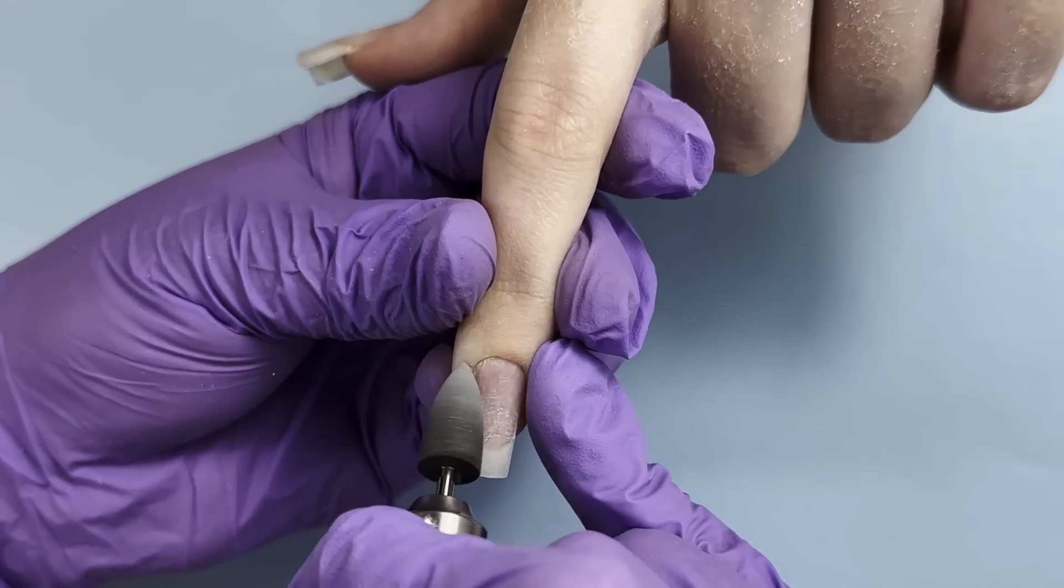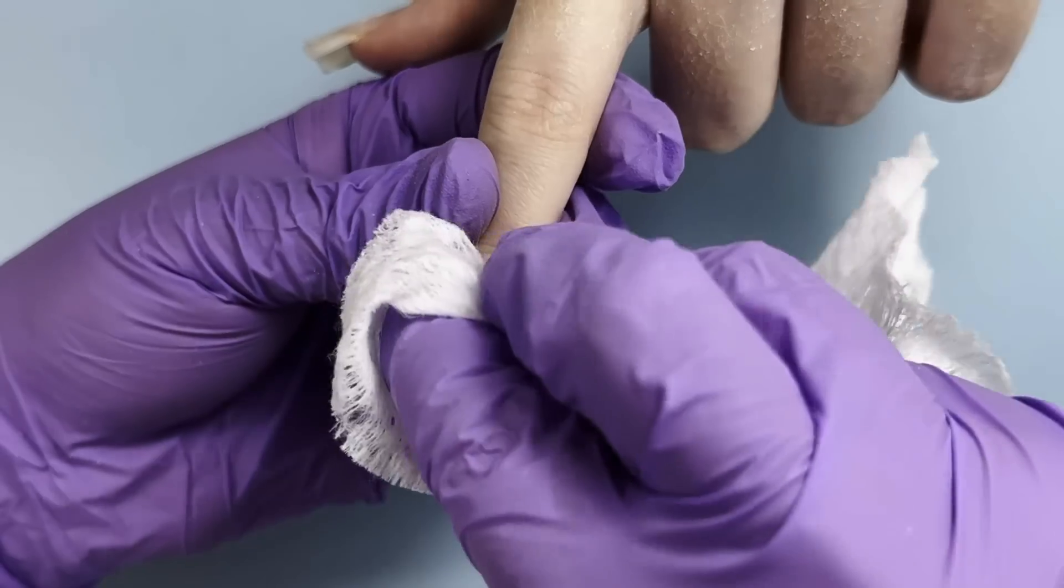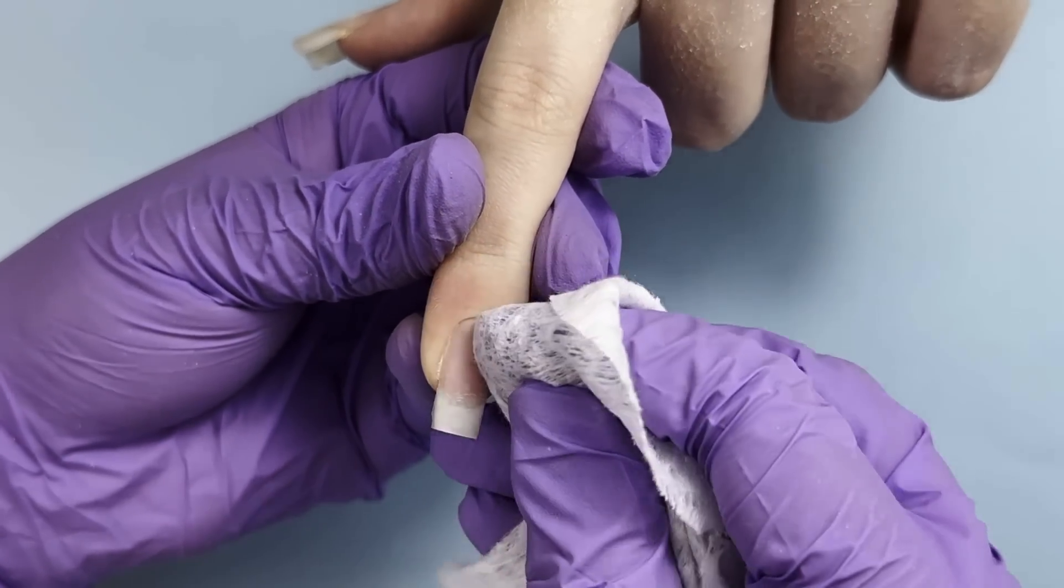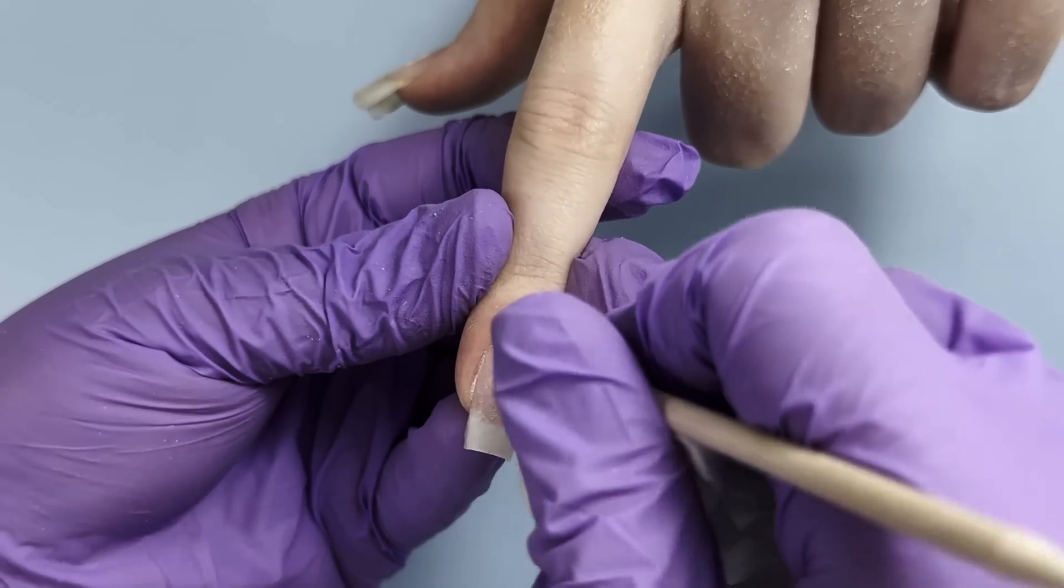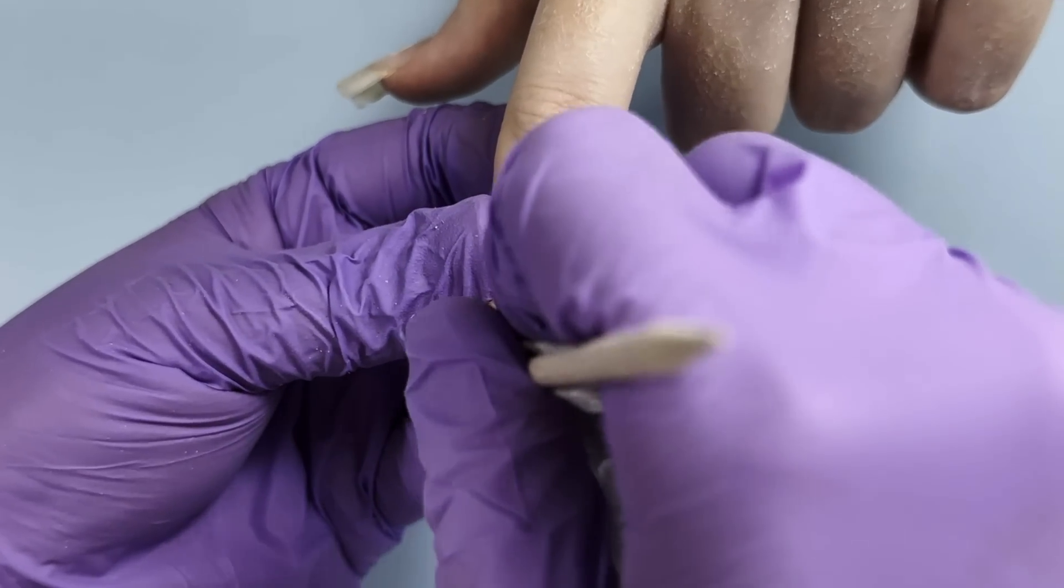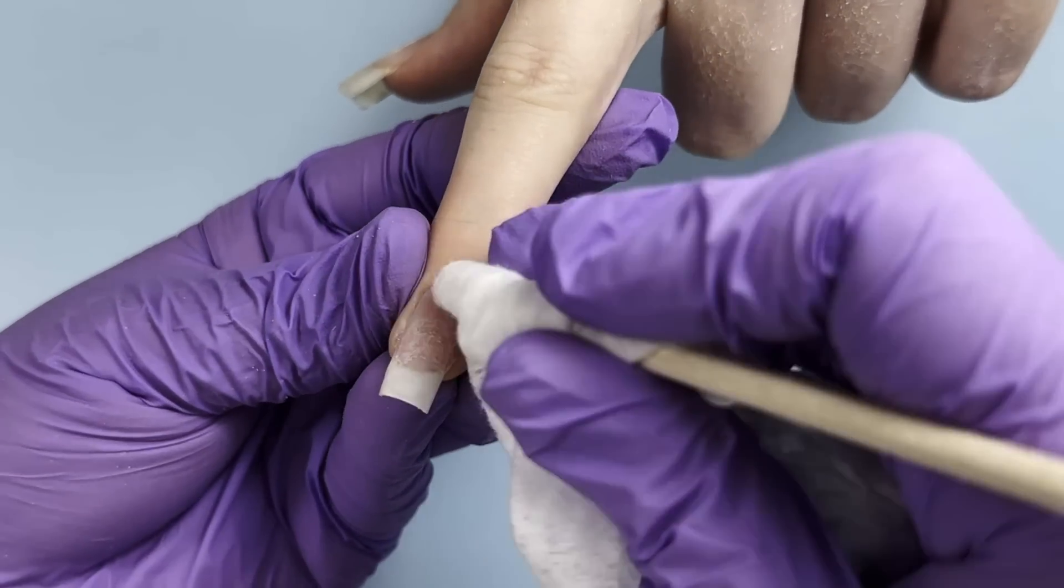Also when you're doing this, you're preventing the client from having hangnails in the future because we are going to buff even the smallest hangnails that could be still there. After that I want to clean the dust to make sure that we have everything clean, especially under the cuticle, because after that we are going to apply base coat and color.